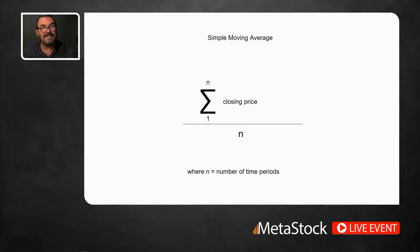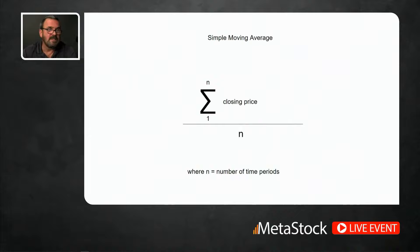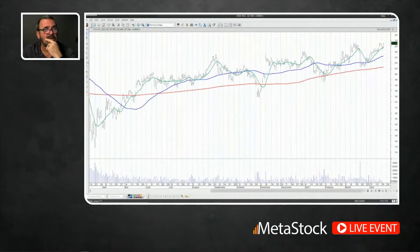Just for fun, if you want to geek out on this — here is the calculation for the simple moving average. Remember, a simple moving average weights everything equally, and N is the number of periods. You'll never have to actually do any of these calculations because MetaStock will do them for you, but it's good to understand what's going on under the hood. It's basically what I illustrated before — it shifts along, advancing the window by the number of periods.